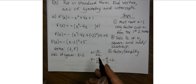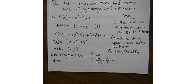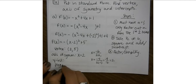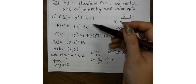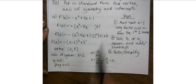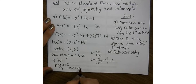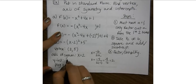For the y-intercept, plug in 0 for x. It's easiest to do this in general form. So y equals negative 0 squared plus 4 times 0 plus 1, giving y equals 1. Any time you give an intercept, you write it as an ordered pair, so this is (0, 1).